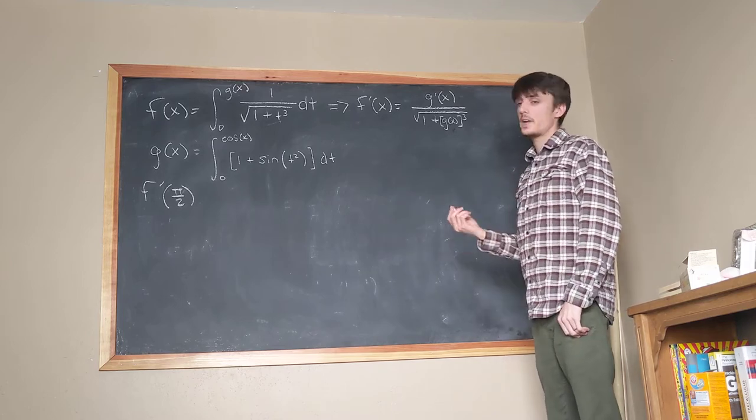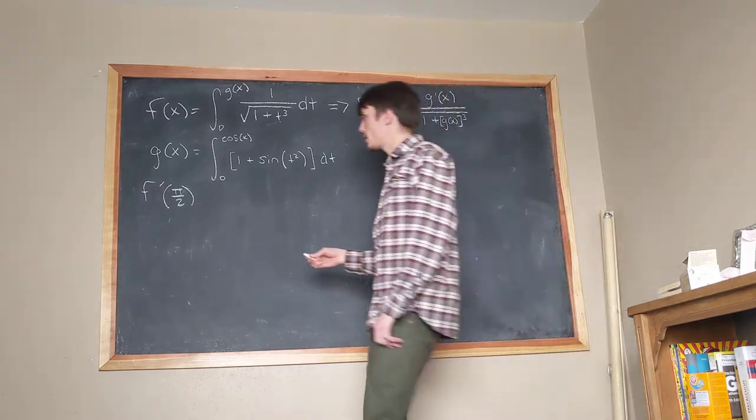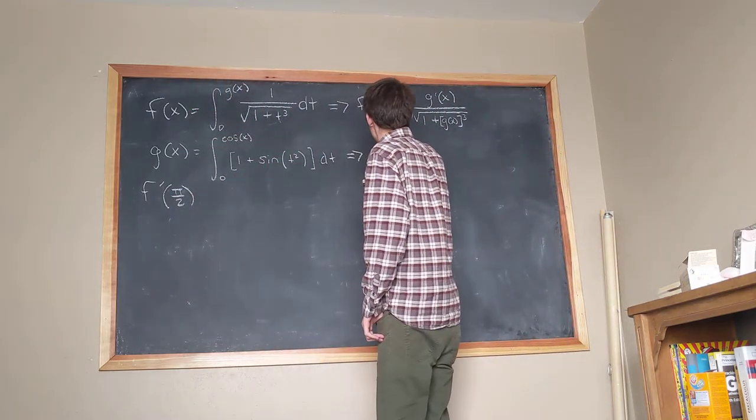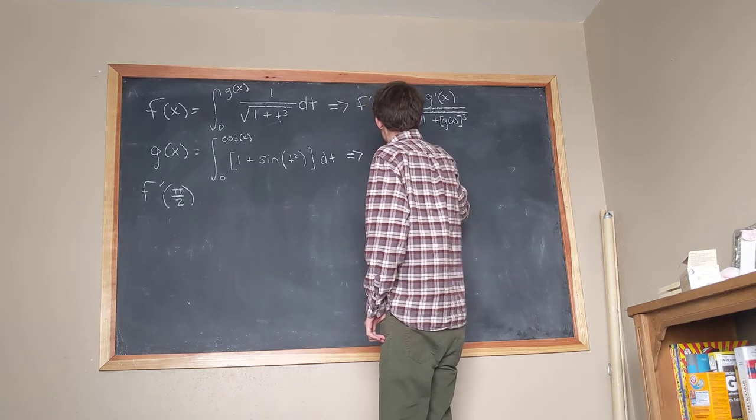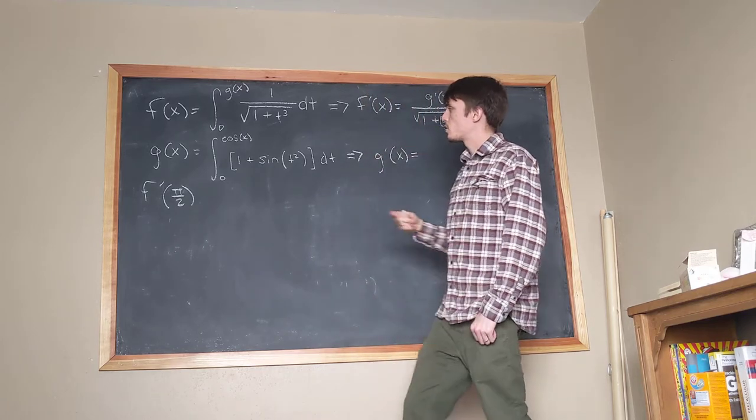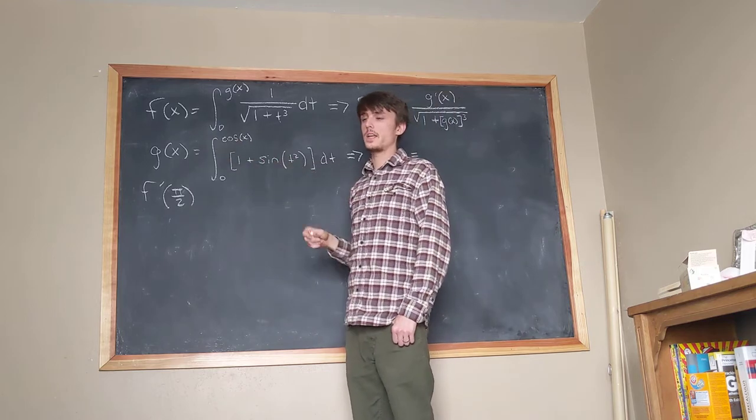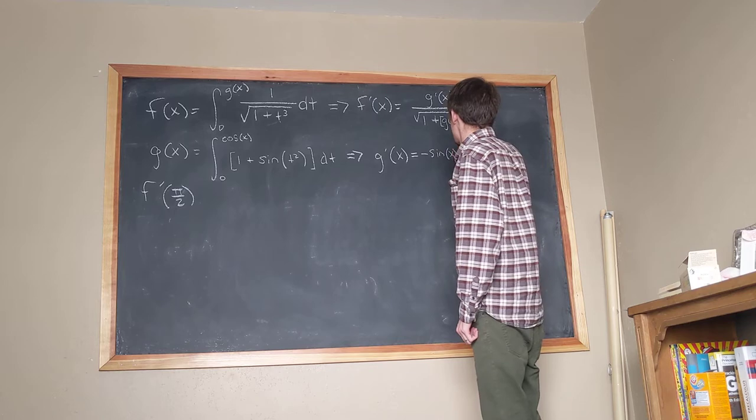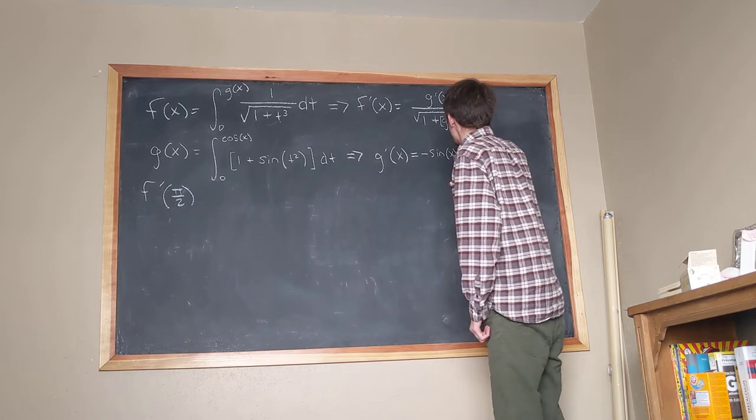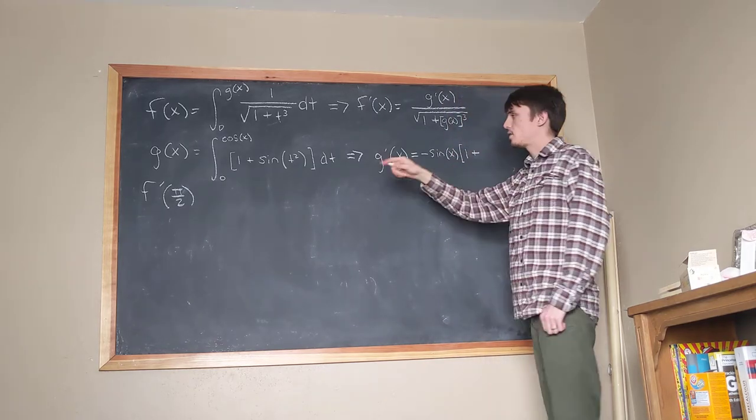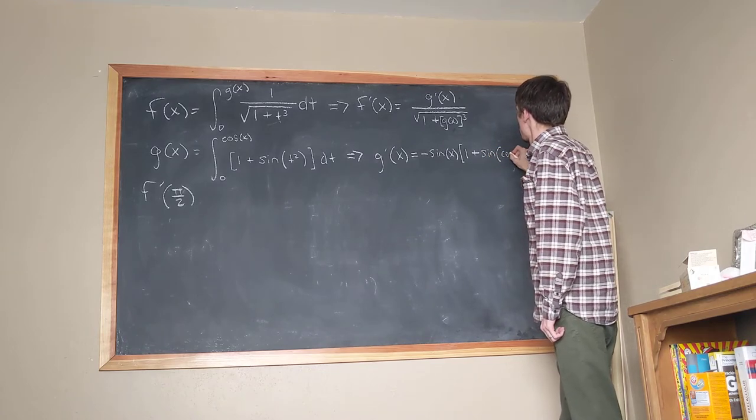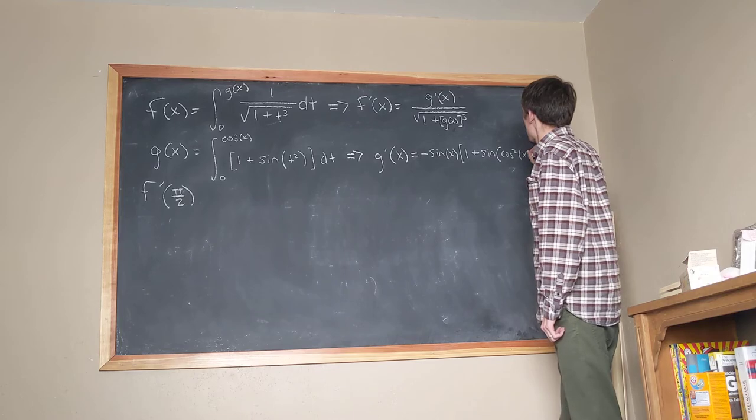Now before we go too much further, let's go ahead and just calculate g prime of x real quick. So coming off of this, g prime of x is equal to, and so we take the derivative of cosine and get minus sine of x. And that's going to be times 1 plus, and then we get sine of cosine squared, sine of cosine squared of x.